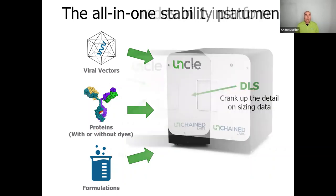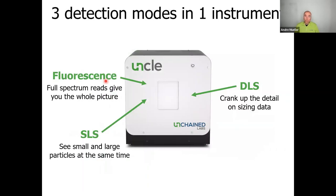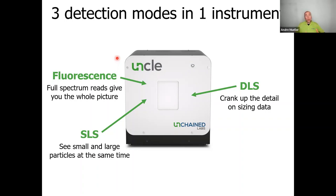UNCLE combines three distinct detection methods in one instrument. The three modes are fluorescence, static light scattering, and dynamic light scattering. In fluorescence mode, we use two laser systems: a laser at 266 nanometers and a laser at 473 nanometers — a UV laser and a blue laser — to excite fluorescence of the analytes. We read the full emission spectrum from 250 to 720 nanometers, and this flexibility keeps you in control.